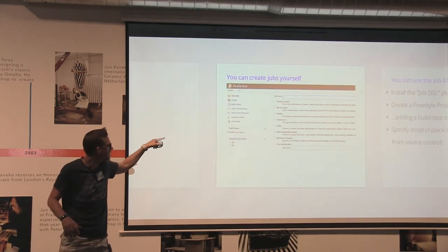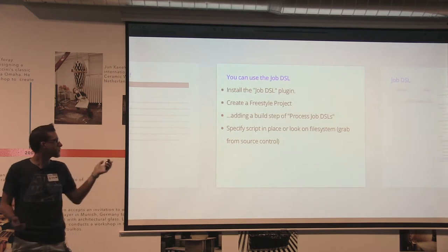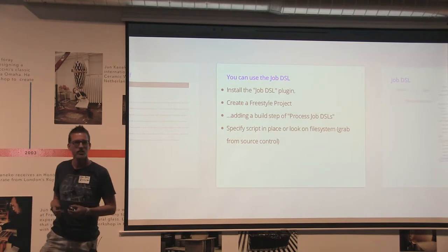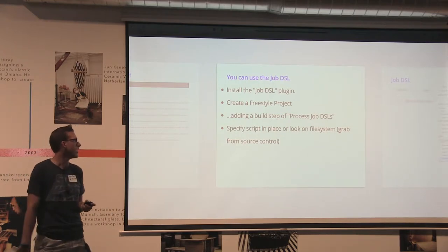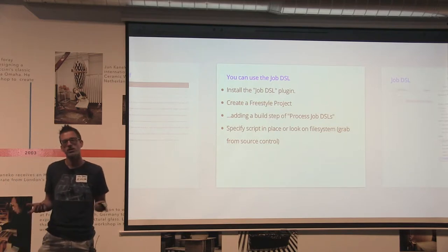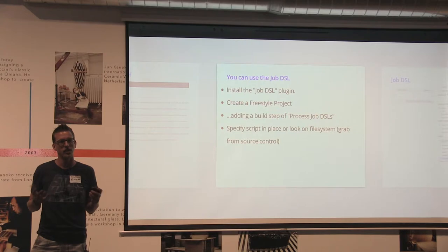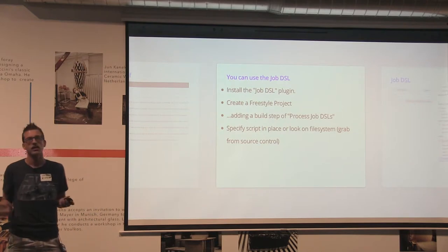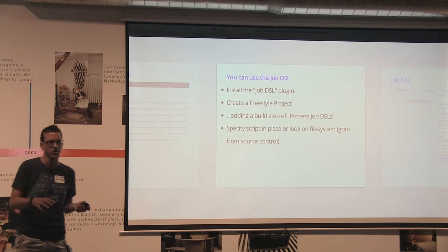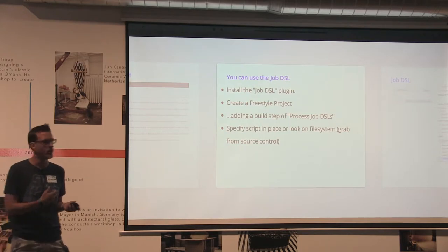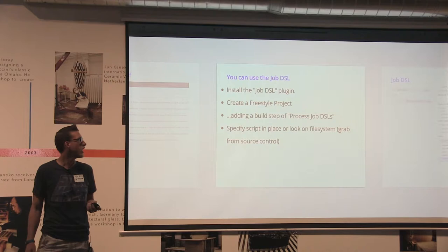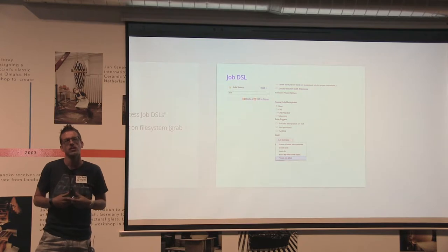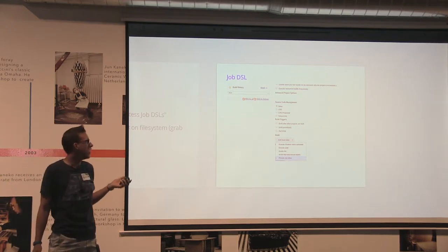Add a build step called 'Process Job DSLs' — it's towards the bottom of the list. Then you specify a script directly within the job itself, or you can have it look on the file system, either by connecting to source control and pulling down the script or having it present automatically. This is the seed job — the task that creates all the other jobs you want.